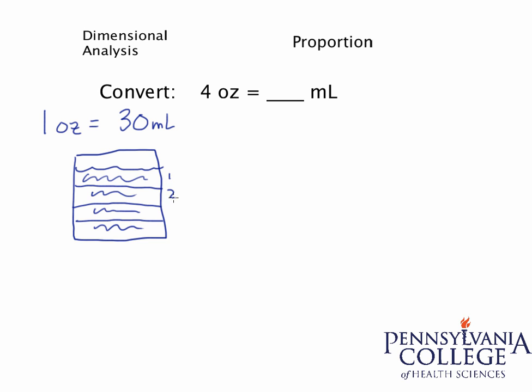Every one of these is worth 30 milliliters. So here's 30, here's 30, here's 30, and here's 30. I know if I were to add all these up, I would get 120. Therefore, immediately I know that four ounces is equivalent to 120 milliliters.